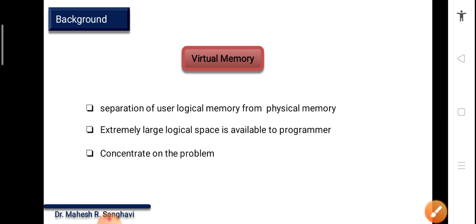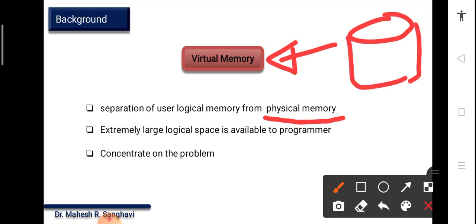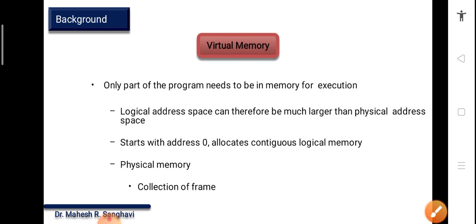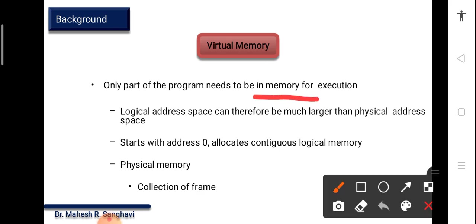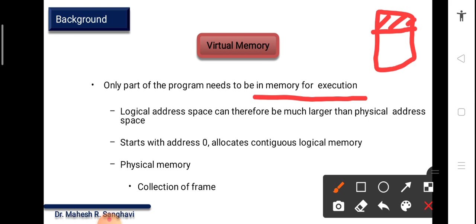Virtual memory is a very important and good concept — it provides separation of user logic memory from physical memory. Though the term 'memory' is used, it is actually the space of the hard disk used as RAM. The benefit is that an extremely large logical space is available for the programmer. One part of a program needs to be in memory for execution. Whatever part is needed will be loaded into RAM, and the rest will be in virtual memory — ultimately in secondary storage.